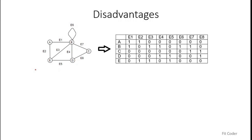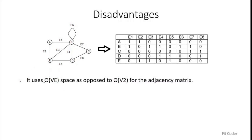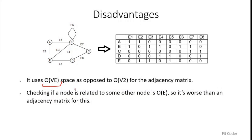Now let's find out the disadvantages of this form of graph representation. Incidence matrix is not a very popular choice among programmers — the most frequently used forms are adjacency list and adjacency matrix. The first reason it's not popular is the space it takes: O(V×E). In the case of a dense graph where the number of edges far exceeds the number of vertices, the space usage is not very efficient.